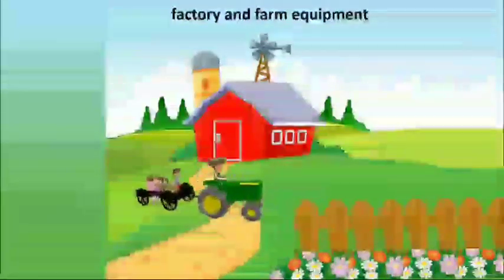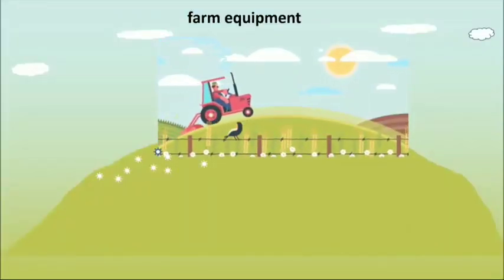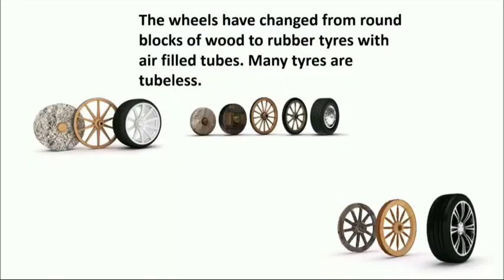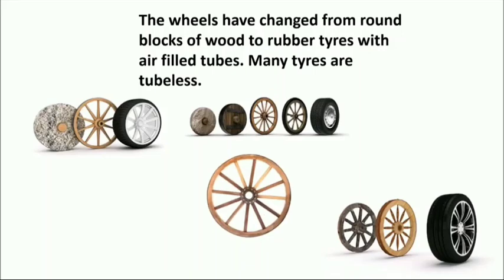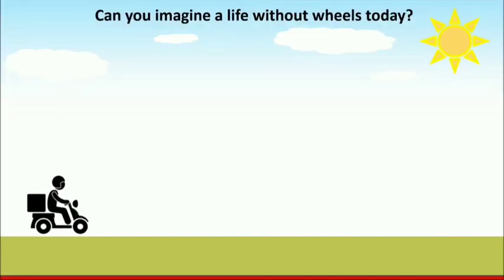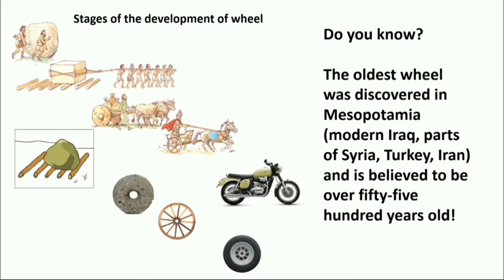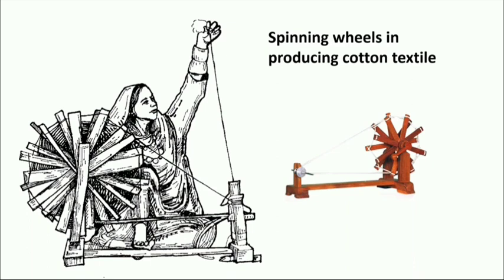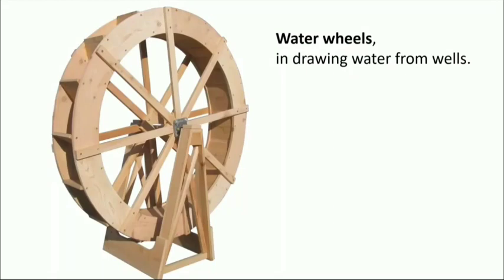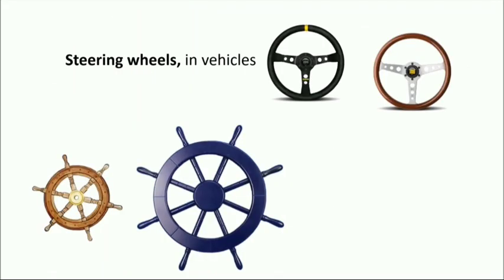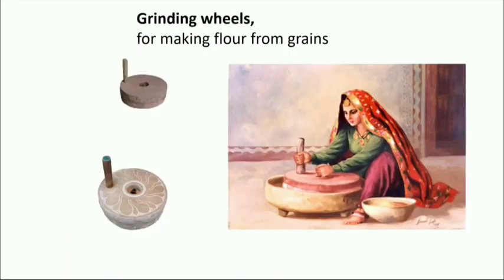Machines, tools, factory equipment, and farm equipment — farmers use tractors to plow the fields. The wheels have changed from round blocks of wood to rubber tires with air-filled tubes, and many tires today are tubeless. Can you imagine a life without wheels? The oldest wheel was discovered in Mesopotamia — modern Iraq, parts of Syria, Turkey, and Iran — and is believed to be over 5,500 years old. Wheels are also used as spinning wheels in producing cotton textiles, water wheels for drawing water from wells, steering wheels in vehicles, and grinding wheels for making flour from grains.